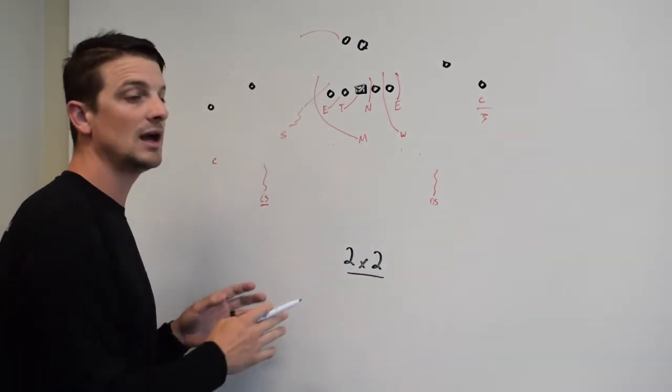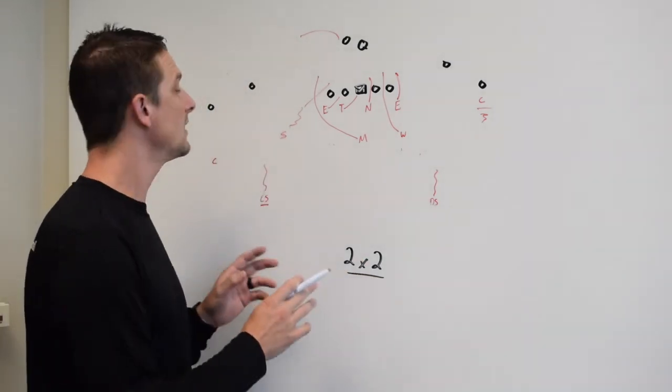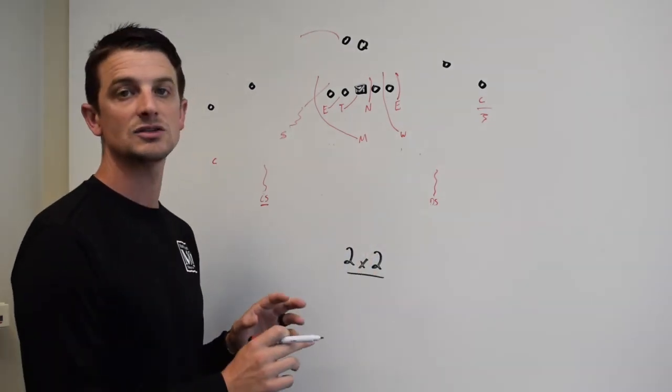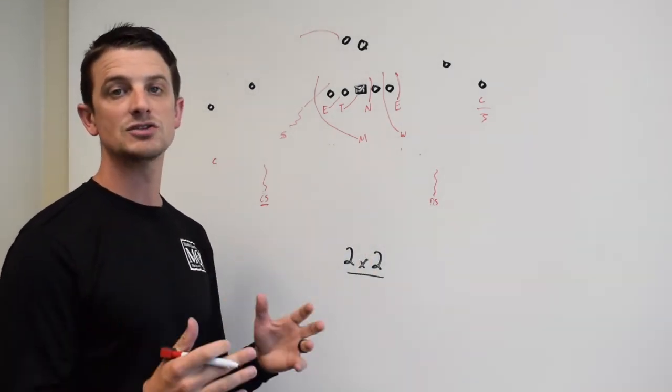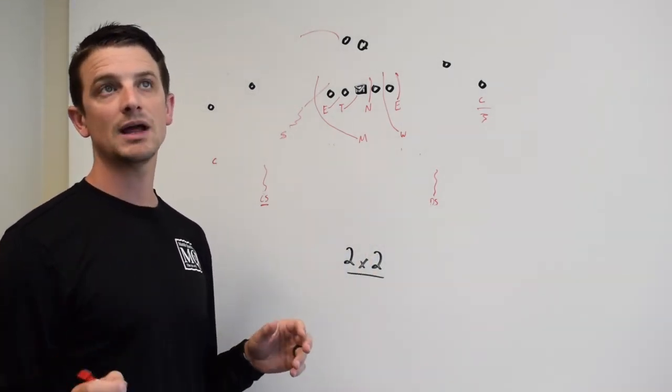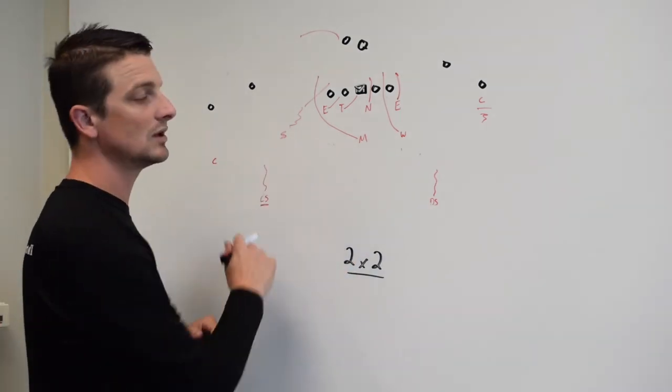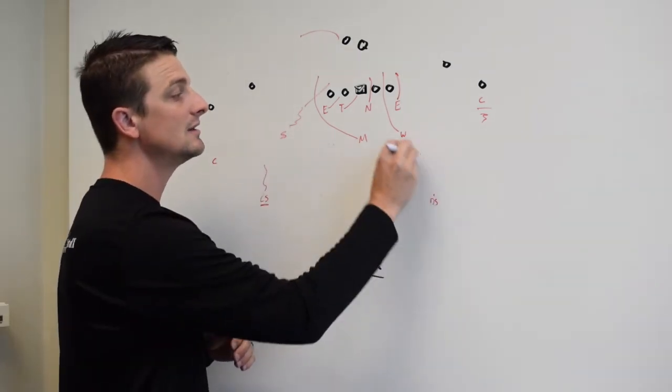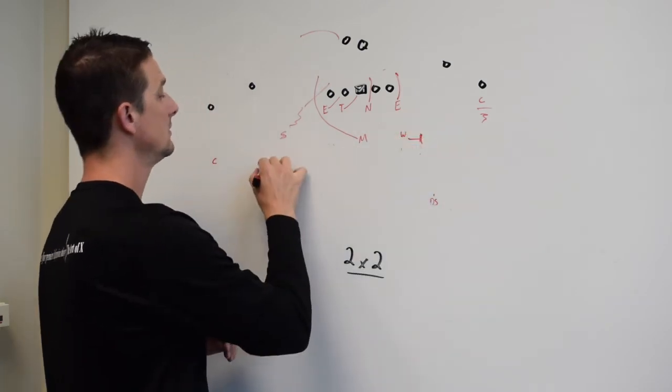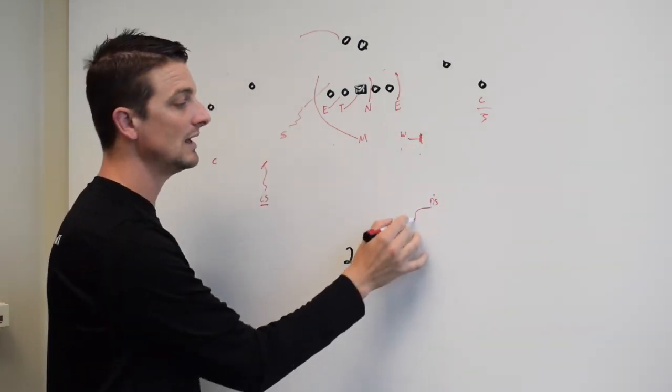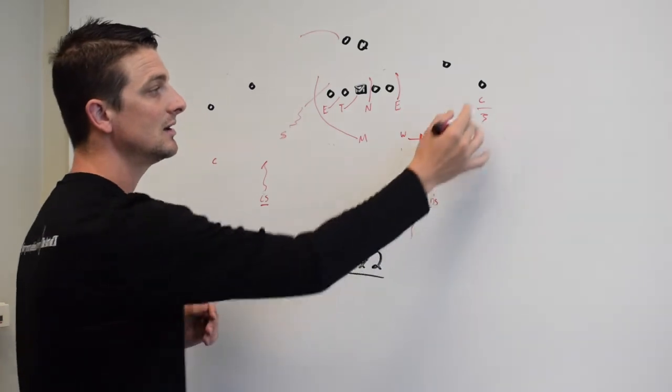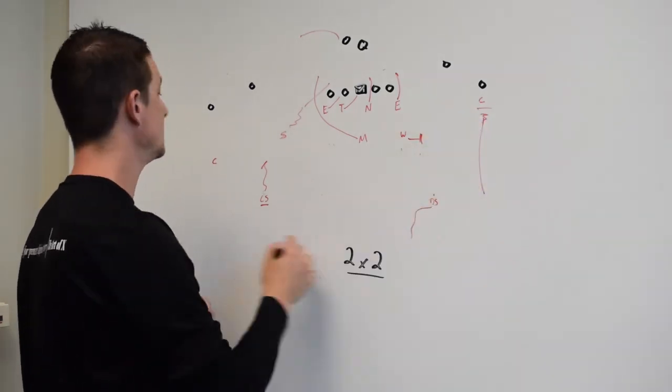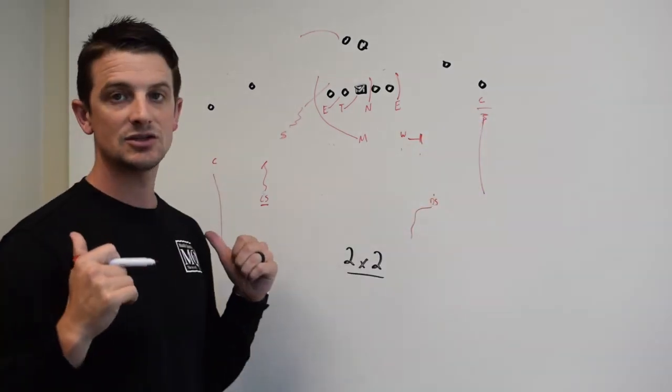When you're blitzing six, if you're going to have to go to a fire zone, I would suggest doing the fire zone where you have three over two. Those overhang players—in this case it would be the will and the cover safety—they need to hold the edge and not allow anything in the middle, and the down safety tops everything with your corners sinking to make sure nothing gets over top of them.